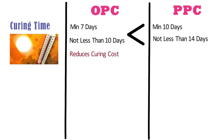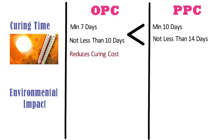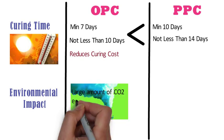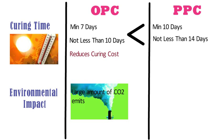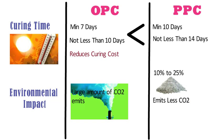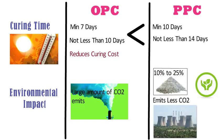OPC is recommended where curing costs are prohibitive. Environmental impact. During the manufacturing process of OPC, a large amount of CO₂ is emitted. Whereas PPC contains 10–25% pozzolanic material, hence it emits less CO₂ during manufacturing. PPC is called environment-friendly as it utilizes by-products of thermal power stations, thus reducing environmental problems.